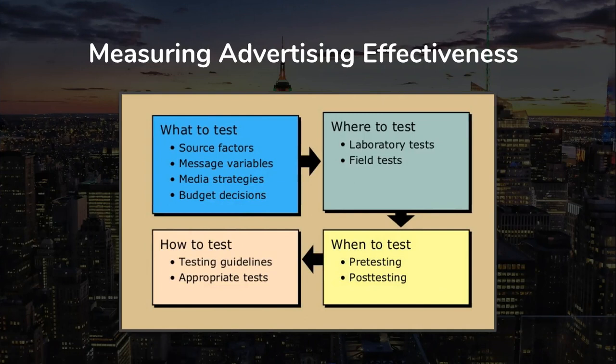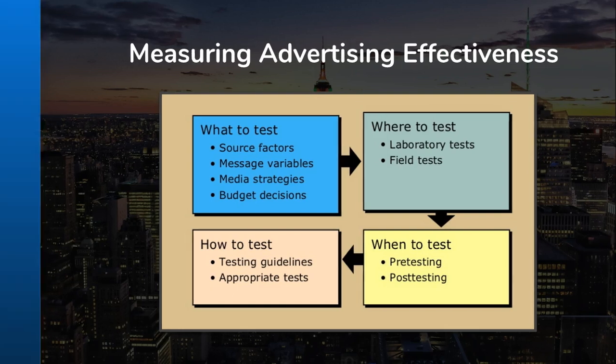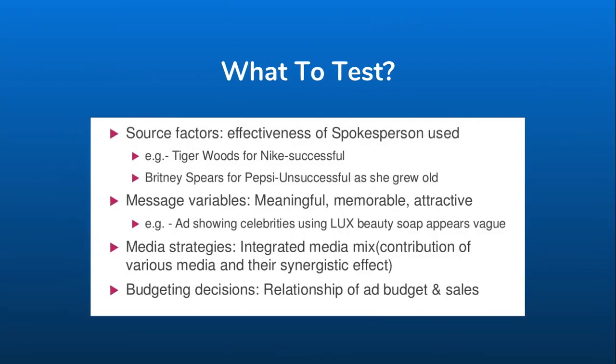In measuring advertising effectiveness, we're going to be looking at what to test, where to test, when to test, and how to test. When it comes to what to test, there are four factors. Source factors is the effectiveness of a spokesperson being used. Message variables are both the message and the means by which it is communicated. Media strategies is which media class generates the most positive results. And budgeting decisions are how much will be spent and where.